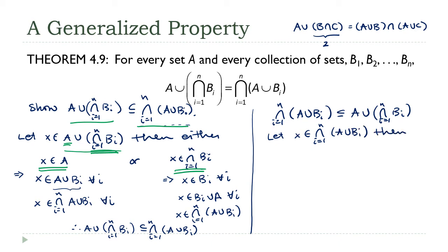Then, by definition of intersection, X must be an element of A union B sub I for all I. If X is an element of A, then we're home free. That's what we needed to show.